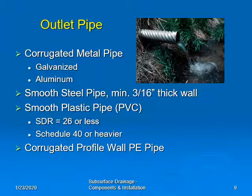When the main outlets to an open channel or a stream, an outlet pipe is needed to transition from the conduit to the free outlet. It is not appropriate to use single wall corrugated plastic drain pipe for the outlet pipe. The IA-46 construction specification lists several conduit materials suitable for use as an outlet pipe, each with advantages and disadvantages. For example, if burning of ditch banks is anticipated, a plastic outlet pipe would be a poor choice. Options for outlet pipe material include corrugated metal pipe — either galvanized or aluminum — smooth steel pipe with a minimum 3/16-inch thick wall, smooth plastic pipe, or corrugated profile wall PE pipe.